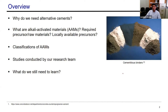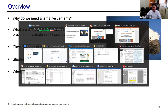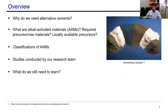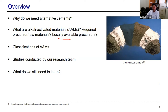The first question is: why do we need alternative cementitious materials? We have Portland cement, traditional cement we have known for many decades. It's working fine — durability, properties, everything is good. So why do we need new materials? And then, what are alkali-activated materials? What type of raw materials do we need? What are the local options we have? Classifications of alkali-activated materials. Then I will share our research experience and what we need to learn more in the future for future establishment of these binders.